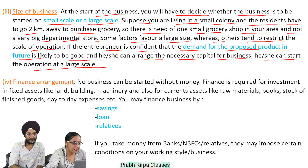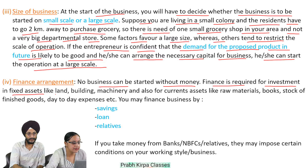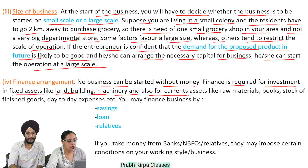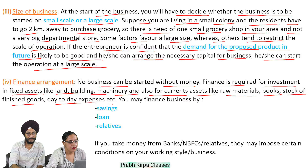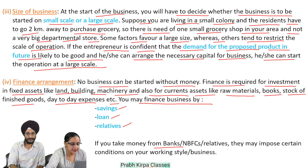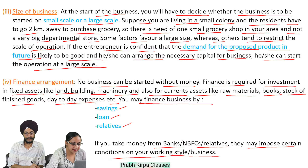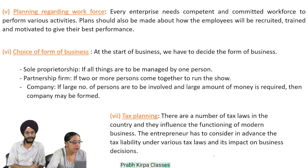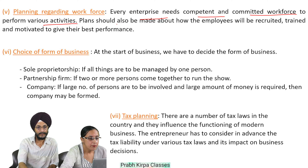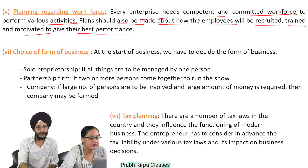Fourth, finance arrangement: no business can be started without money. Finance is required for investment in fixed assets like land, building, machinery, and also for current assets like raw materials, stocks of finished goods, and day-to-day expenses. You may finance business through savings, loans, or relatives. If you take money from banks, NBFCs, or relatives, they may impose certain conditions on your working style. Fifth, planning regarding workforce: every enterprise needs a competent and committed workforce. Plans should also be made about how employees will be recruited, trained, and motivated to give their best performance.